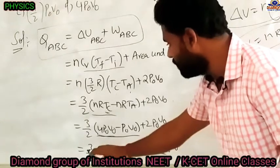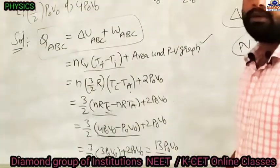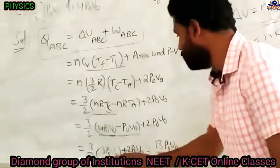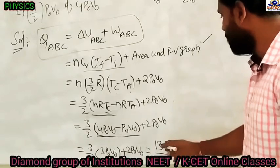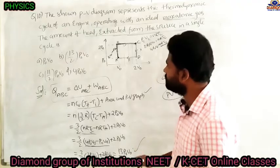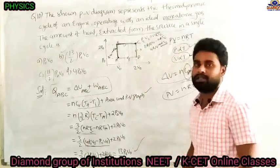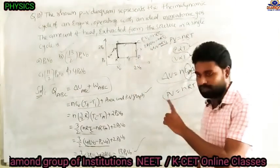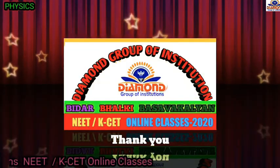The answer is 13P₀V₀/2. Concentrate on this type of graph-based question as you will get at most one such question. Remember to identify which processes absorb heat and which release heat by analyzing the PV diagram carefully. Thank you.